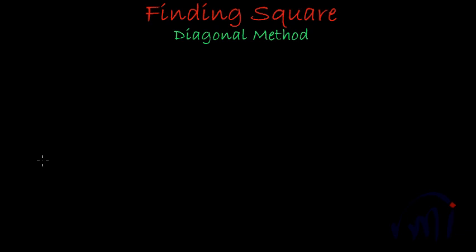Here we are going to learn a different or alternate method of finding squares of a given number. Suppose if you want to find the square of a two-digit number, suppose 72.